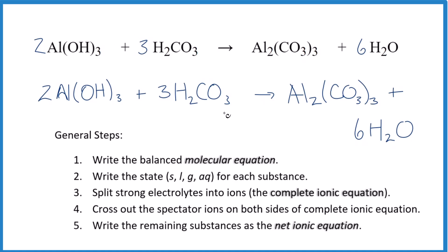Next, we write the state for each of these substances. Hydroxides, if you know your solubility rules, are in general insoluble, except for things in group one like sodium hydroxide or potassium hydroxide. So we're going to call aluminum hydroxide a solid. Carbonic acid will dissolve in water, so it's going to be aqueous — but it's a weak acid, and we'll talk about that in a moment.